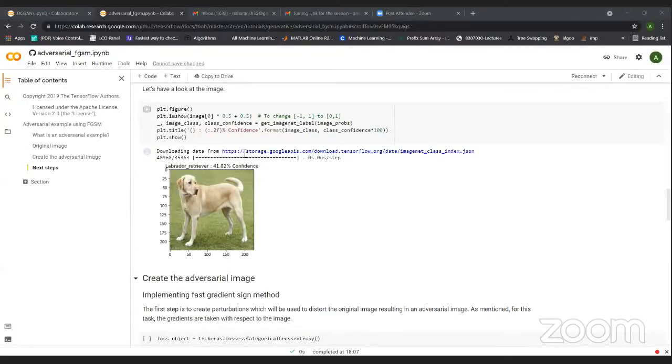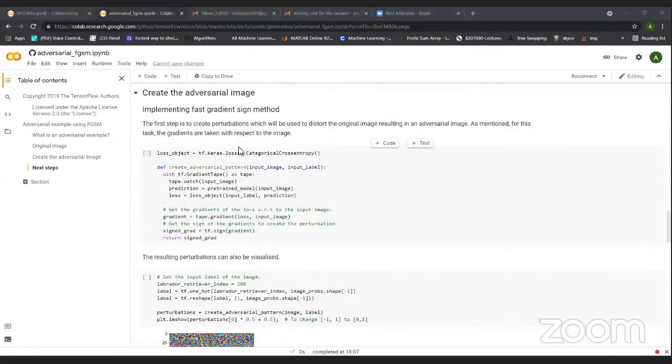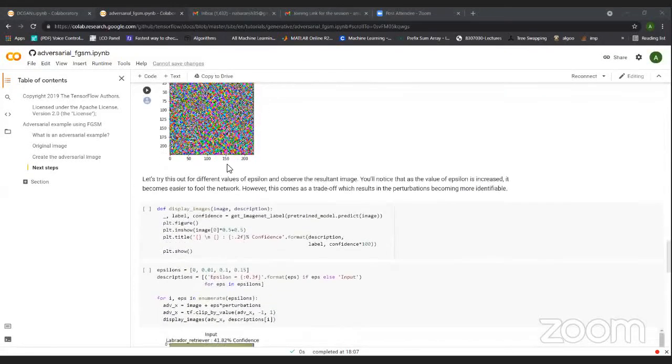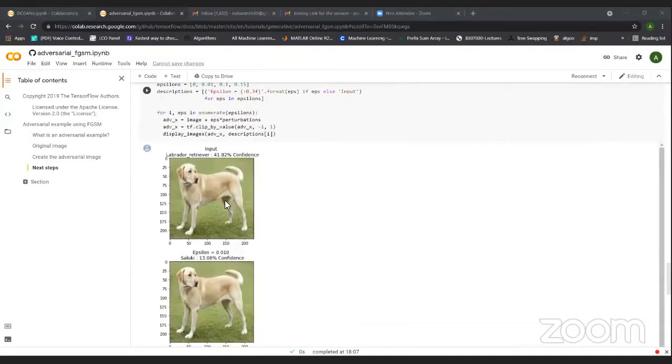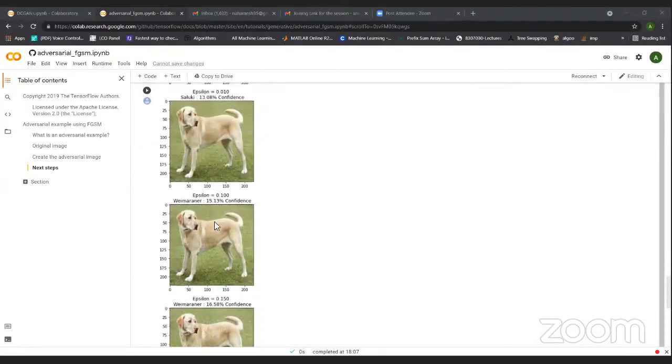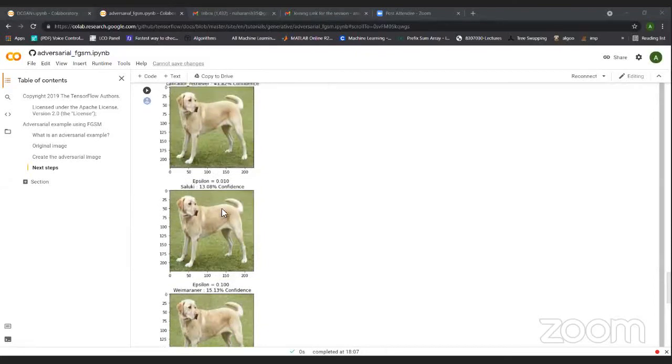It is also known as Lab with 41.82% confidence. So then we do the same thing. We use the FGSM technique and we created four and five different types of adversarial examples.